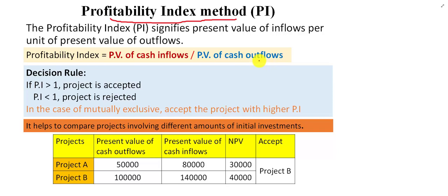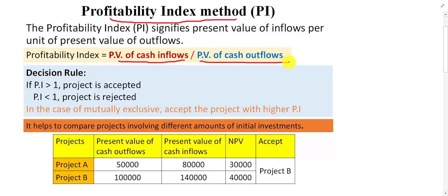This method compares the inflow of the project with the outflow of the project, which is why it divides the present value of inflow by the present value of outflow — to find out how much profit we made for each unit of investment. The decision rule is: if PI is greater than one, the project is to be accepted; if PI is less than one, the project is to be rejected.